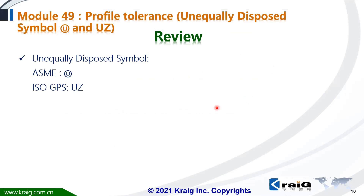Let's have a quick review of this module. In this module, we have explained how to specify profile tolerance with an unequally distributed tolerance zone. We are going to use either the U-circle or UJ symbol, depending on which international standard you are using. Thanks for watching. I will see you in the next module.